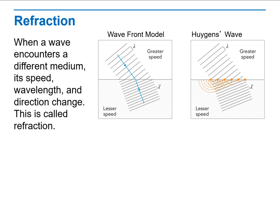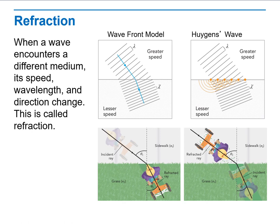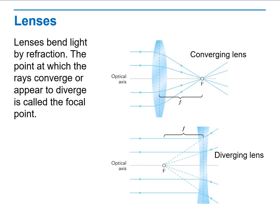Then we will talk about refraction. When a wave encounters a different medium, its speed, wavelength and direction change. This is called refraction. Slowing down here in both cases. Look at different cases, slowing down and speeding up.